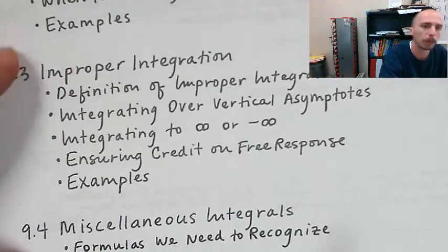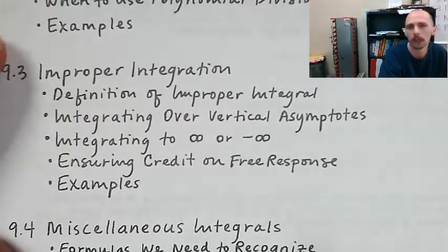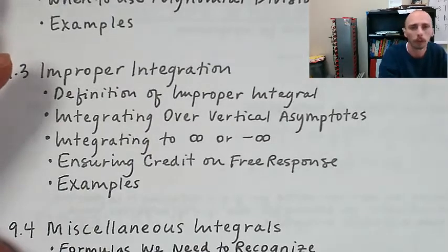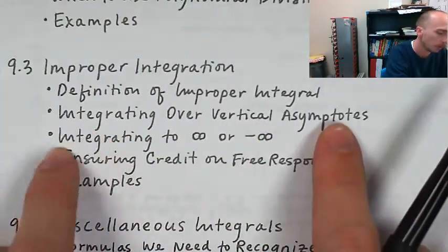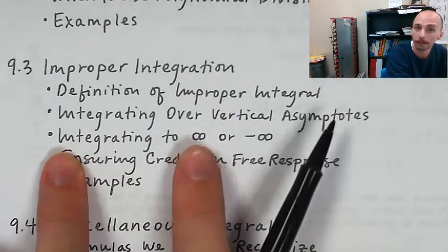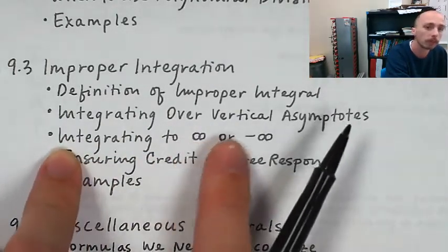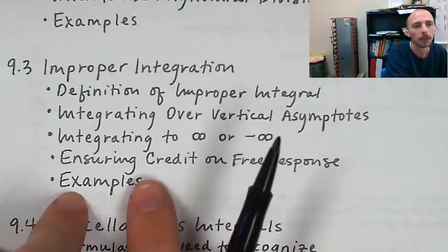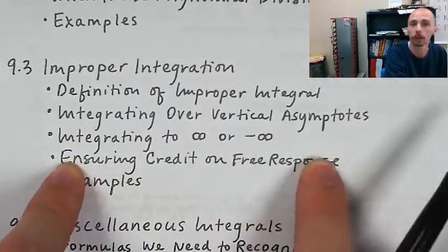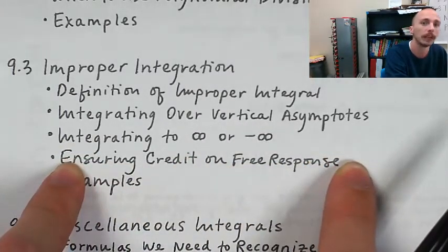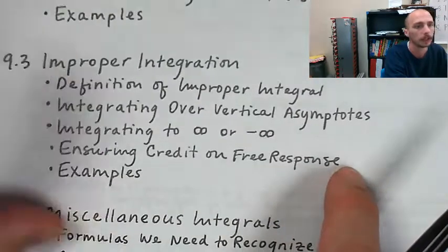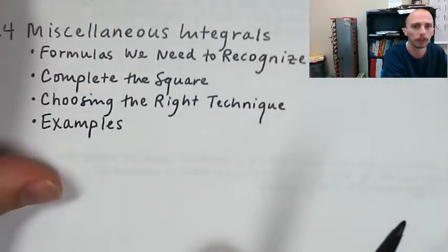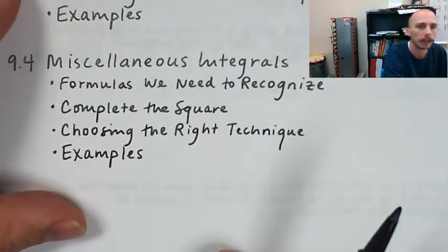In the third lesson, we learned about improper integration, which was pretty much integrating against asymptotes, be they vertical or horizontal. We could integrate over vertical asymptotes or all the way to infinity against a horizontal asymptote or negative infinity. We learned how to ensure credit on the free response by turning it into a limit. If you didn't turn it into a limit on free response, you got no credit.